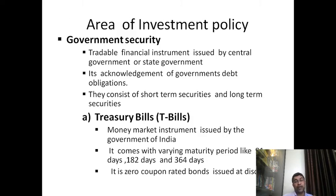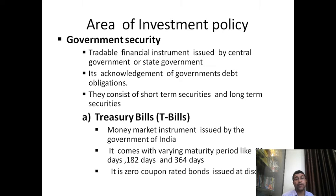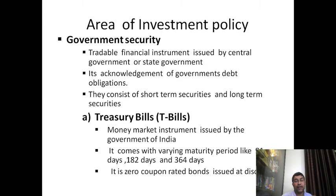The areas of investment policy include securities covering safety, profitability, and liquidity. The first area is government securities — tradable financial instruments issued by the central or state government, acknowledging the government's debt. They consist of short-term and long-term securities. Government securities are considered safe because the government will not fail. One instrument is treasury bills, a money market instrument issued by the Government of India, with maturity periods of 91 days, 180 days, and 364 days — all less than one year.